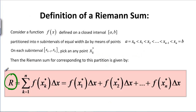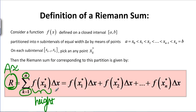In general, the area is approximately equal to the Riemann sum. The Riemann sum is the sum from K equals 1 to N — from rectangle 1 to rectangle N — of F of some point, which is the height, times delta X, which is the width. If you multiply height and width for each rectangle and add them all up, that gives you the value of the Riemann sum.